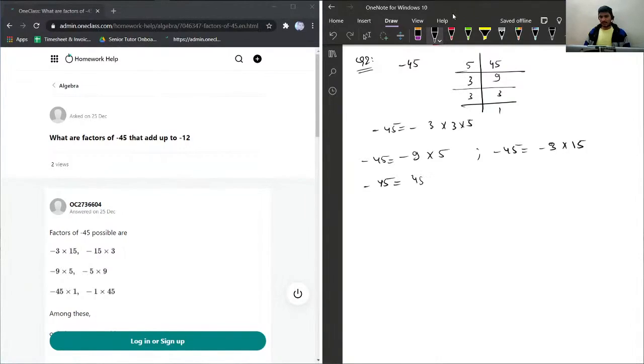So what we need to do is we need to add these numbers, these factors. If I add negative 5 with 5, I will get negative 4, which is not equal to negative 12. In this case, I will not get the answer.